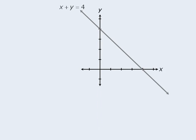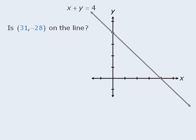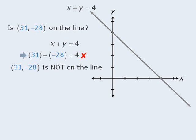So from what we know now, how do we determine whether the point (31, negative 28) lies on our line? Well, for that point to lie on the line, its coordinates must satisfy the equation of the line. When we plug 31 in for x and negative 28 for y, does this equal 4? The answer is no, so the point (31, negative 28) does not lie on the line.